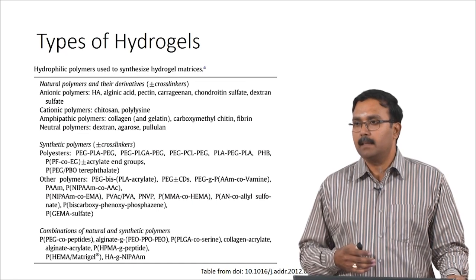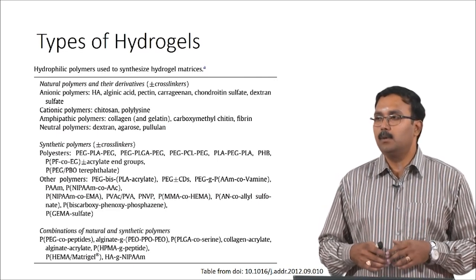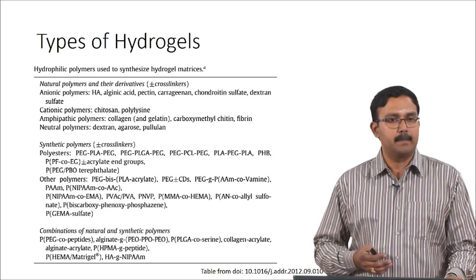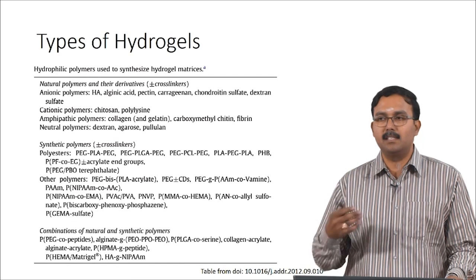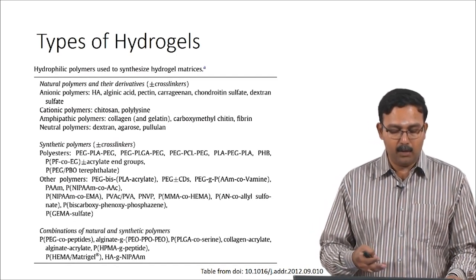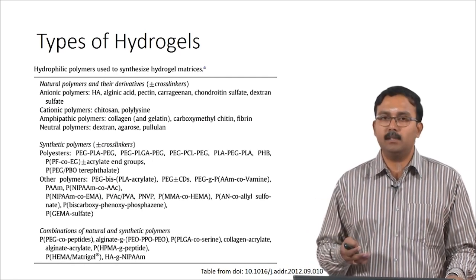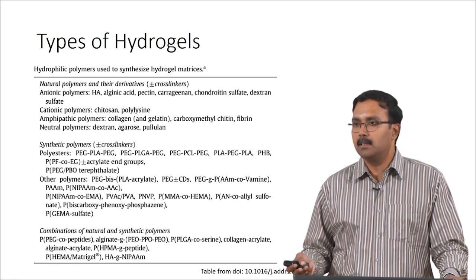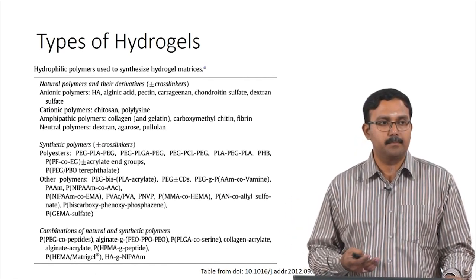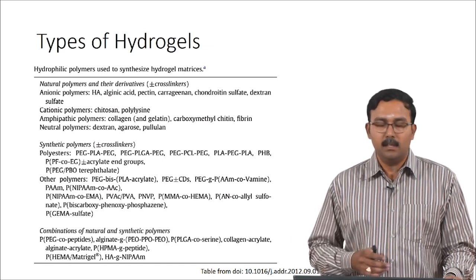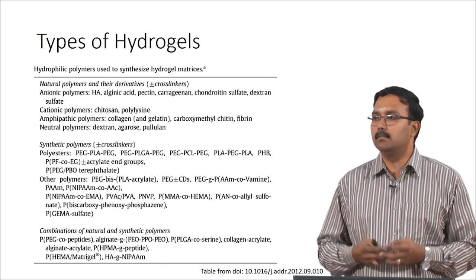For different applications people have tested these natural polymers, and they have also been used along with synthetic hydrogels and synthetic polymers to get desirable mechanical and degradation properties. Among these, they can be classified as anionic, cationic, amphipathic, and neutral polymers depending on their charge. Anionic polymers include hyaluronic acid and alginate, cationic polymers include chitosan, and neutral polymers include dextran, agarose, and pullulan. These charges play a role in cell attachment and cellular interactions.